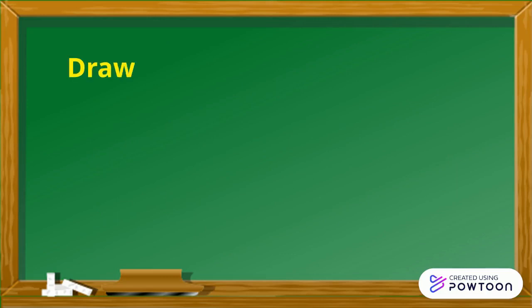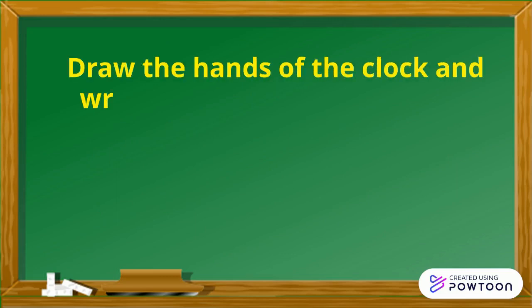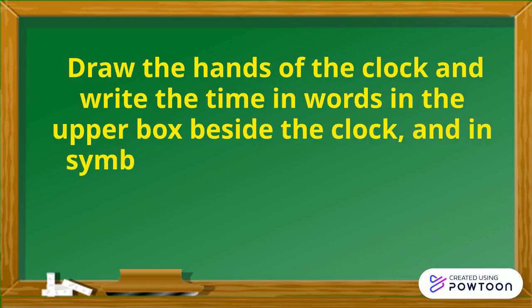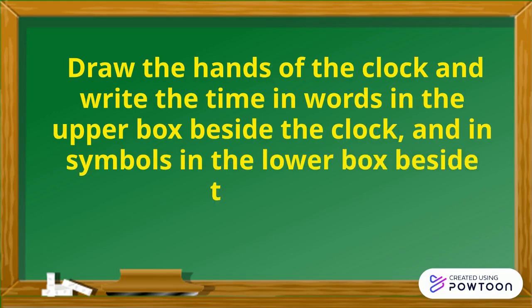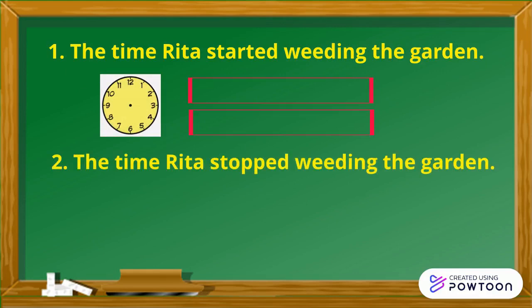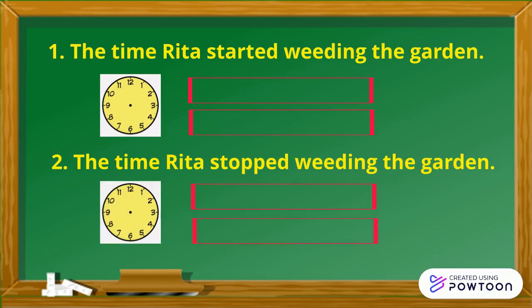Here is what you need to do. Draw the hands of the clock and write the time in words in the upper box beside the clock and in symbols in the lower box beside the clock. Number 1: The time Rita started weeding the garden. Number 2: The time Rita stopped weeding the garden.